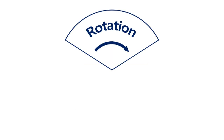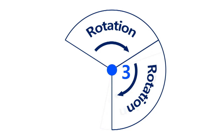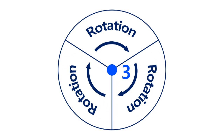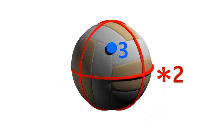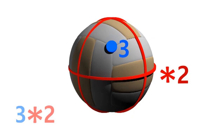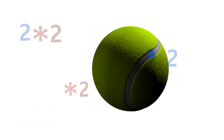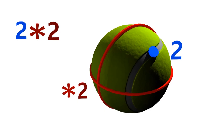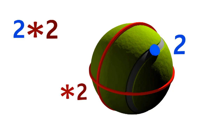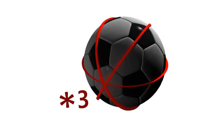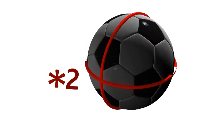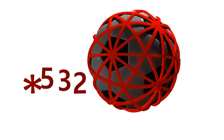We can also have rotational symmetry. A blue three means that the same pattern is rotated around a point three times. A volleyball has a three-way rotation and a two-way reflection, so its symmetry is three-star-two. A tennis ball has a two-way rotation and reflection, so it's two-star-two. A soccer ball has a five-way reflection, a three-way reflection, and a two-way reflection, so its symmetry is star-five-three-two.